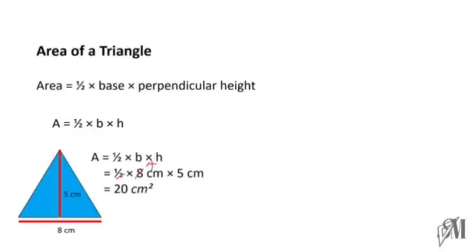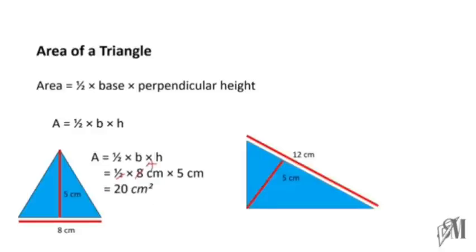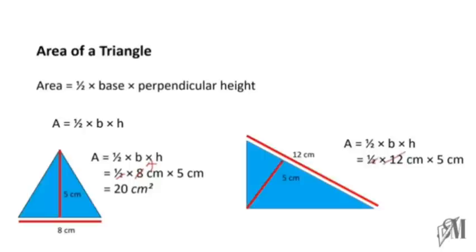Moving on to another example. In this case, the base is considered as the side of length 12 centimeters, and from that side the height of the triangle is given as 5 centimeters. You have to clearly understand how to identify the base and the perpendicular height, and then always remember to write the equation when it is applied. Here, 2 and 12 can be cancelled to give 6, and so 6 into 5 gives 30 square centimeters.